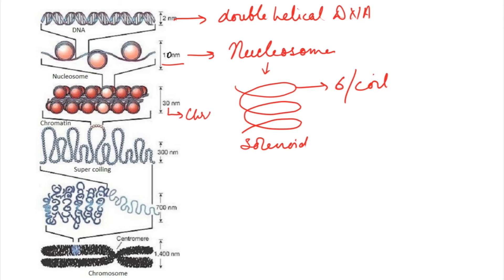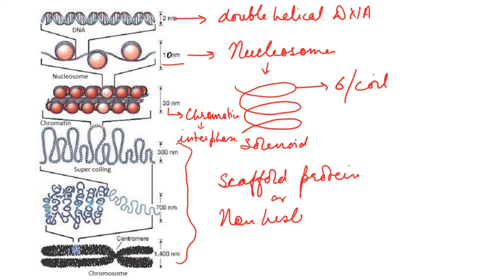This is the chromatin thread that can be seen during the interphase in the nucleus. Further coiling of chromatin into chromosomes occurs with the help of scaffold proteins, or you can say the non-histone chromosomal proteins, finally to make the chromosomes.